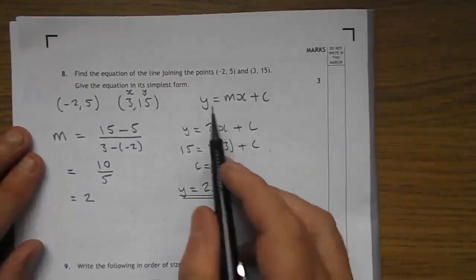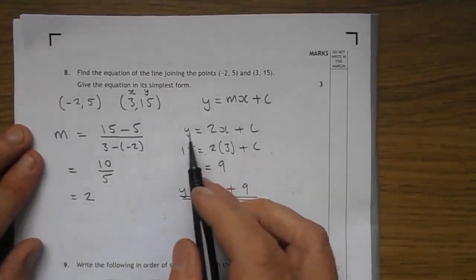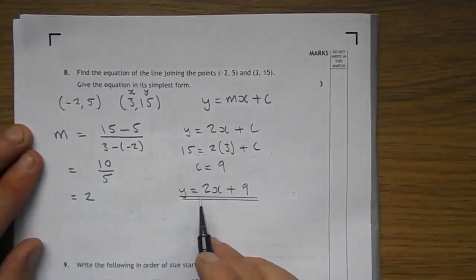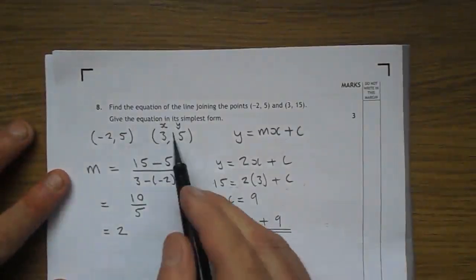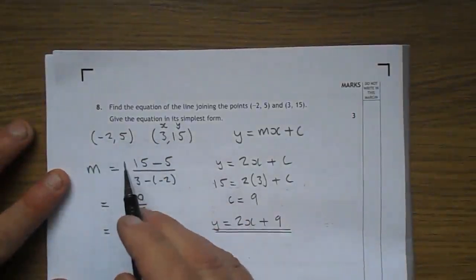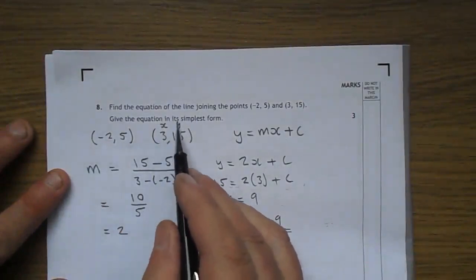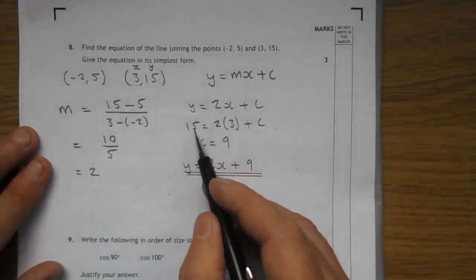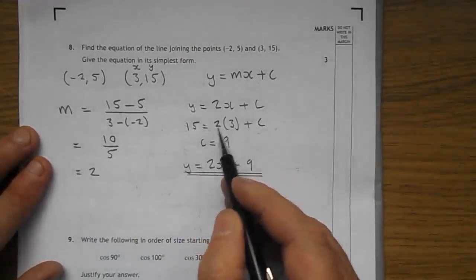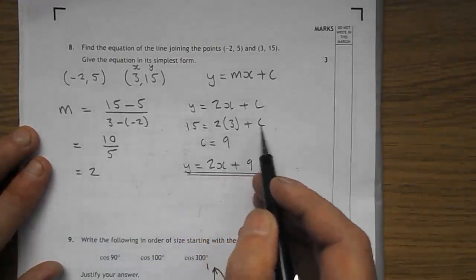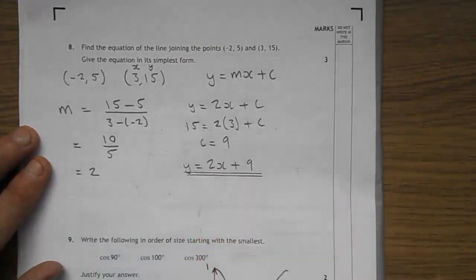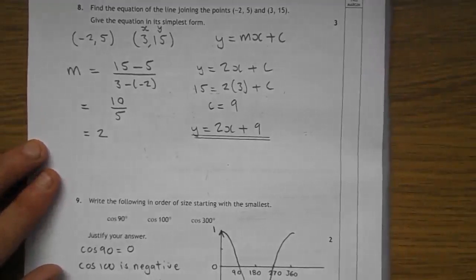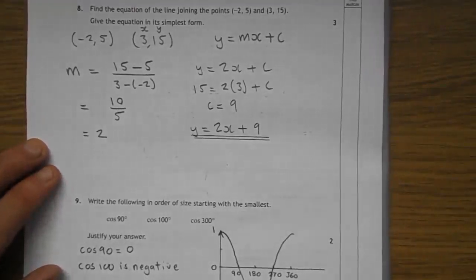So, if you choose to do the Y equals MX plus C route, you have Y equals 2X plus C, with M being 2. You can choose either of these to be your XY components. There's an X coordinate. There's a Y coordinate. We can plug them in here. Y, 15 is 2 times X. 2, 3's are 6. Add what gives 15? 9, of course. So, Y equals 2X plus 9 is the equation of that.